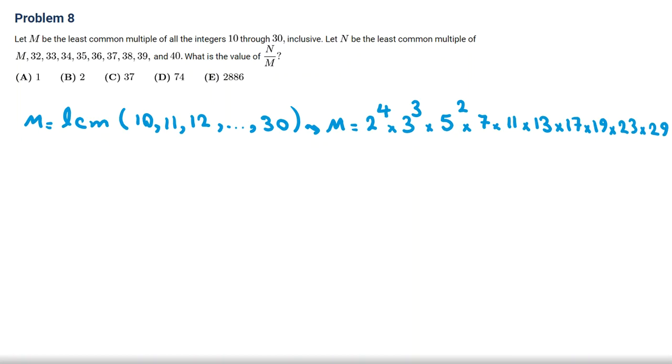So, we found M. M is okay now. Let N be the least common multiple of M, 32, 33, 34, 35, 36, 37, 38, 39, and 40.